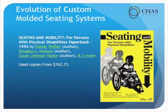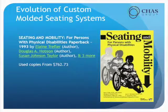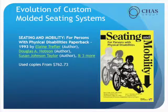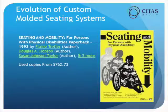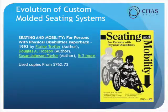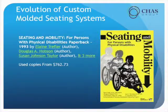I went on Amazon and was looking for old seating and positioning textbooks. I actually have an old rehabilitation engineering textbook from 1990 that has Hobson's chapter in it — showing the 90-90-90 and all the initial theories of seating and positioning and custom seating. I came across it and that book is going for $762. Can you believe that?